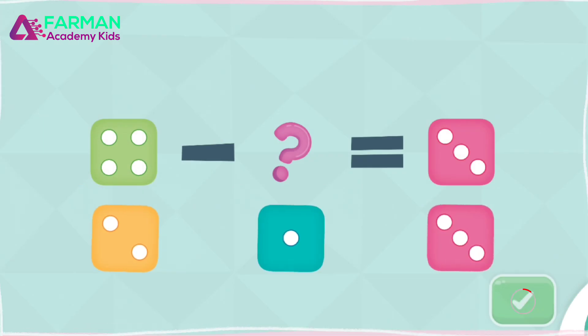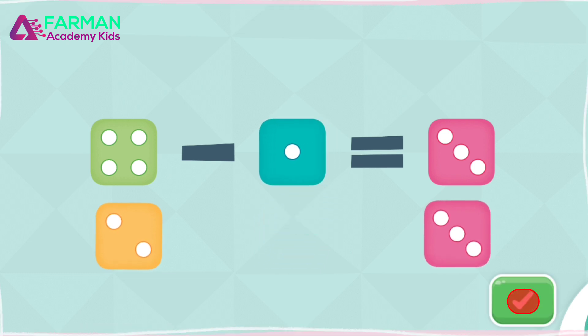Four minus what equals three? Drag the correct die to the question mark. Tap and count the snowballs. Four minus one equals three.